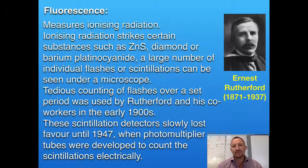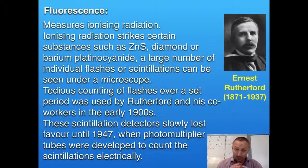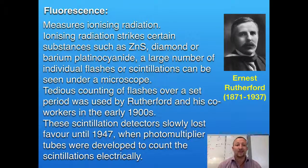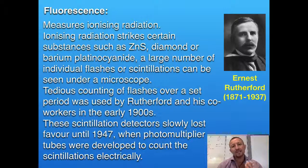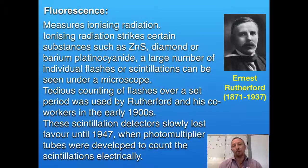Later on, fluorescence was used with Ernest Rutherford. Rutherford worked on the ionizing properties of this radiation. When this radiation ionizes certain substances like zinc sulfide, diamond, barium platinum cyanide, what we get is these flashes — this production of light. By counting the number of flashes you get, you can determine the radioactivity present. More flashes means more radioactivity.